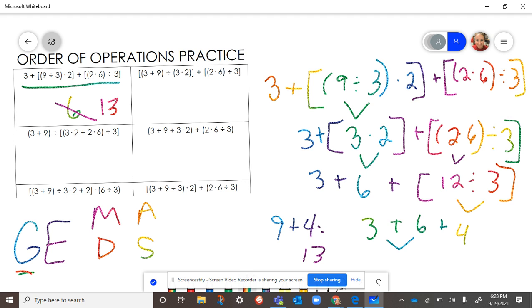So this GEMDOS going in order. So again, groups, exponents, when you get to the multiplication and division, remember multiplication is not always first. You sometimes have to divide first. So for example, if it was six divided by three times two, I would do this part first because the division comes first.